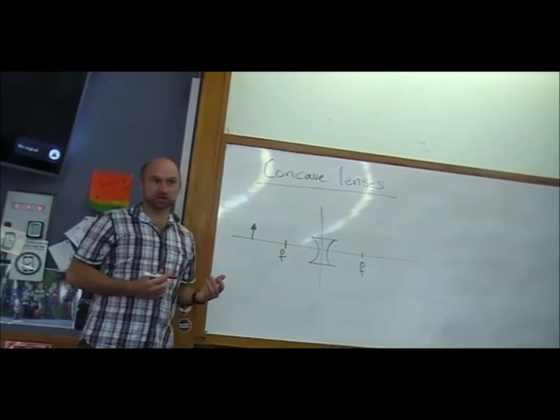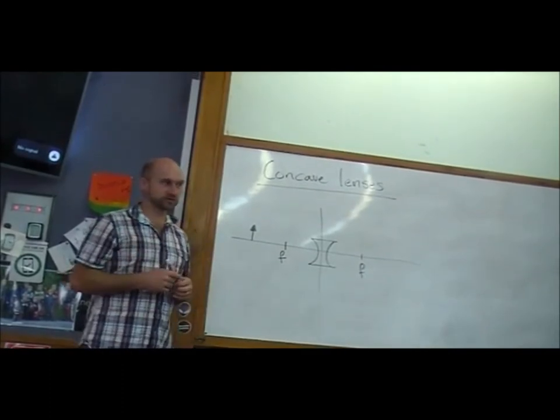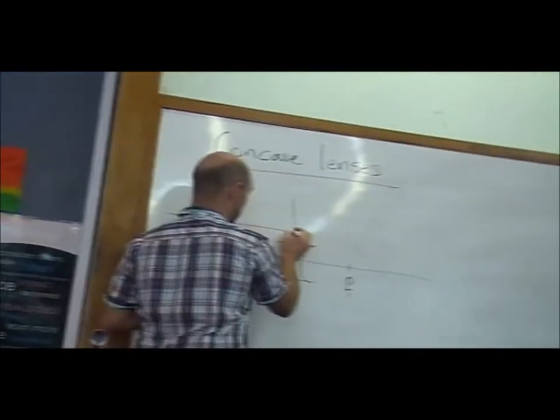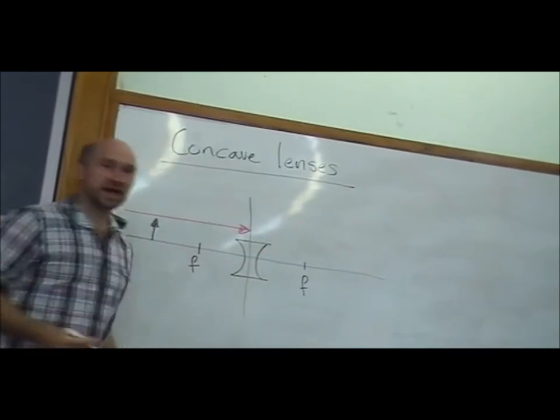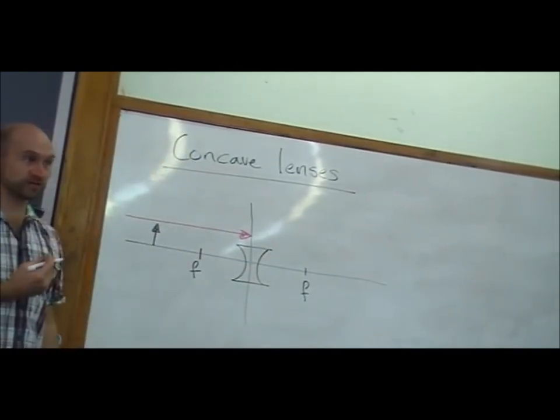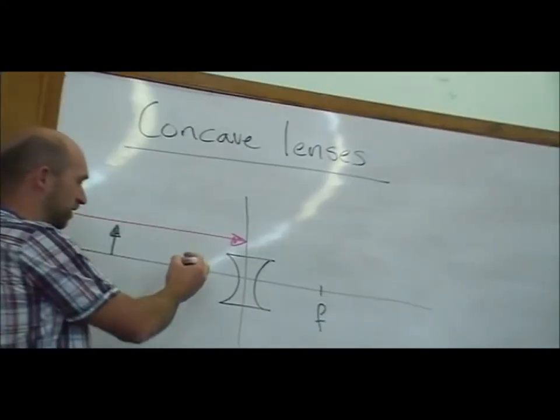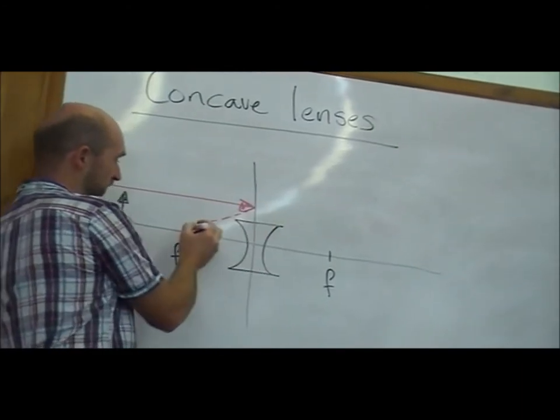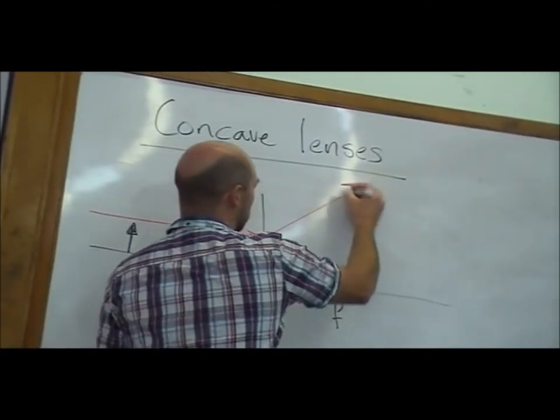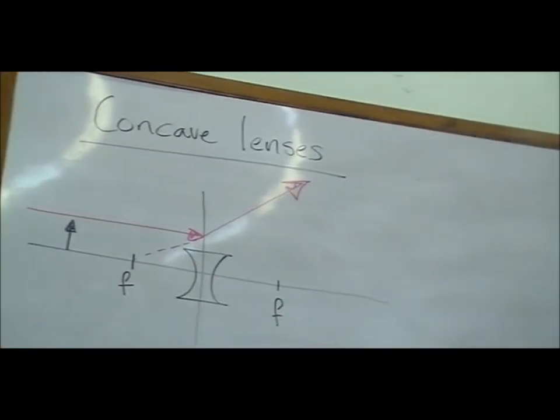And that helps us draw the first ray. We're going to follow our same three rules for rays that we always follow. So, the first one is going to be in parallel, out through focus. But we have to use the opposite focal point from what we used when it was a convex lens. So, we're going to go out, but away from the near focal point. So, it's going to spread a parallel ray of light out, like that.